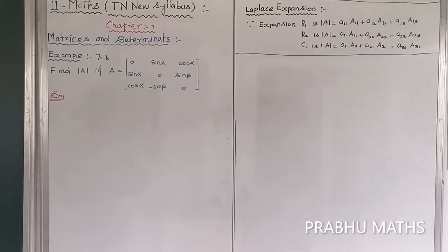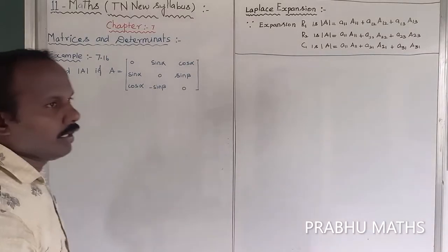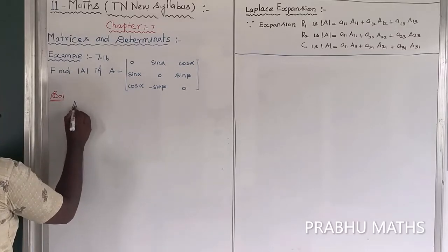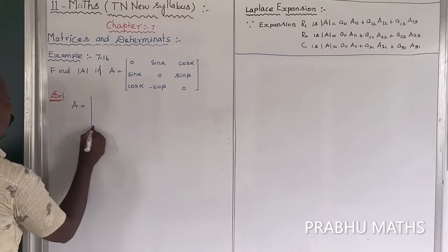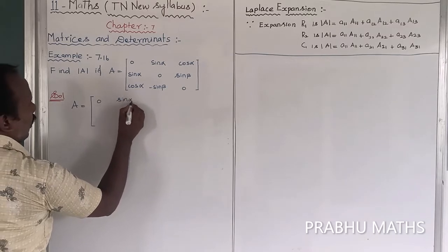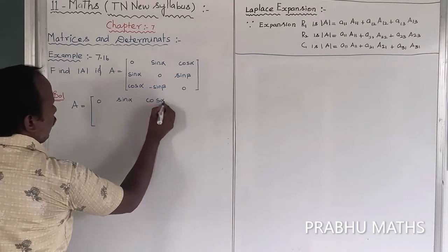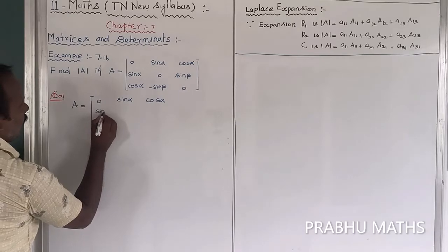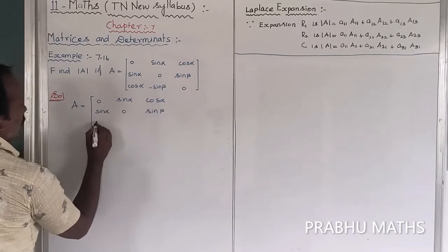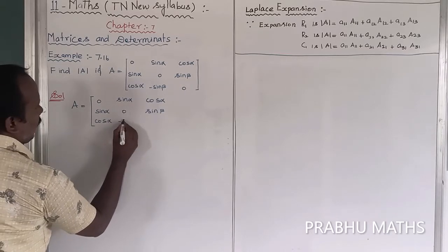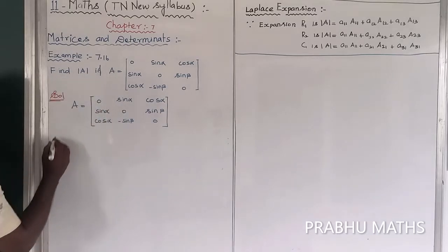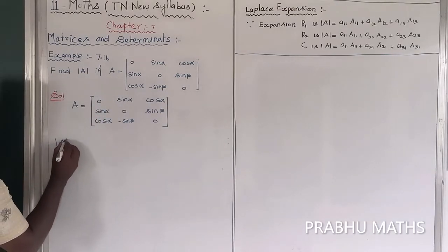Example 7.16: Find the determinant of A. The matrix A is given as: first row is [1, sin α, cos α], second row is [0, sin β, -sin β], third row is [1, cos α, 0]. We need to find the modulus (determinant) of A.